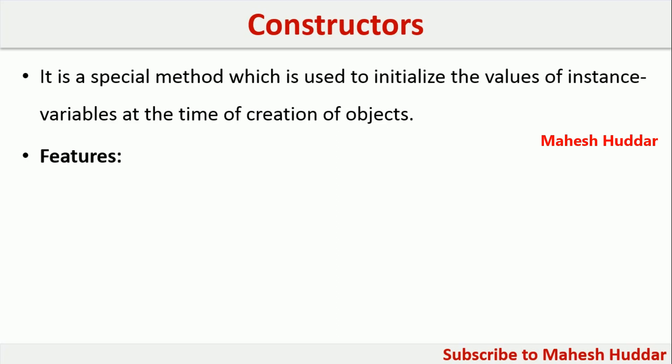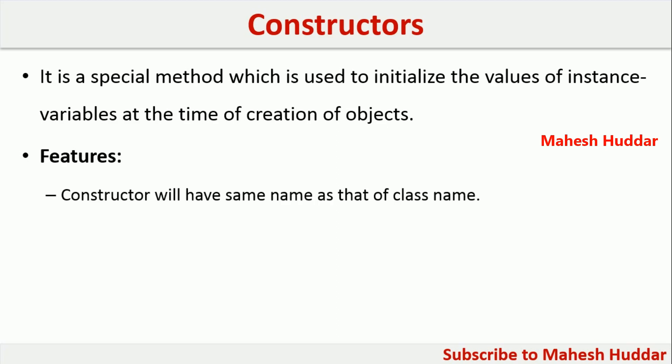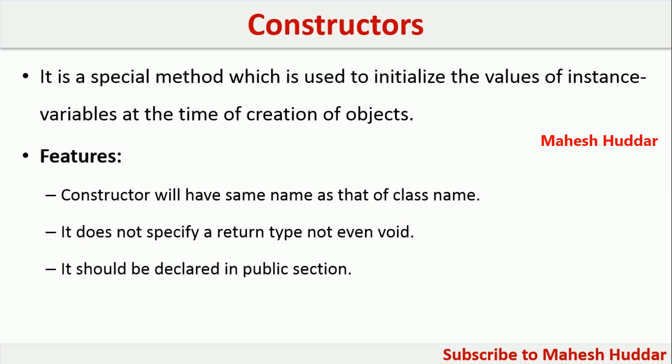The following are the features of a constructor. First, the constructor will have the same name as the class name. Second, the constructor should not specify any return type — not even void. Third, it should be declared in the public section of the program. These are the three very important features of constructors in Java.